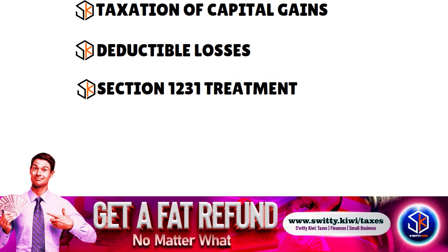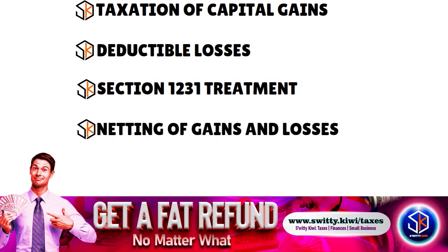Form 4797 also allows taxpayers to take advantage of special tax treatment for Section 1231 assets — depreciable property used in a trade or business, such as real estate and equipment. When those assets are sold at a gain, the gain can be treated as a long-term capital gain, which generally results in a lower tax rate than ordinary income. Additionally, the form provides a mechanism for netting gains and losses from multiple business property sales during the tax year to determine your overall net gain or loss.